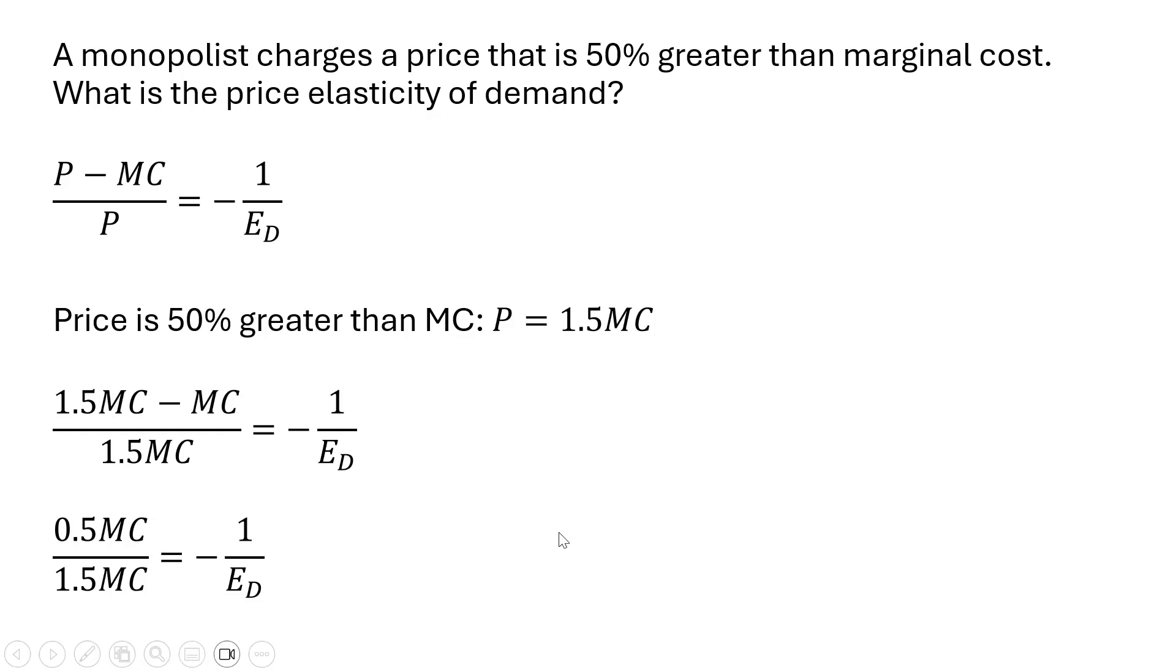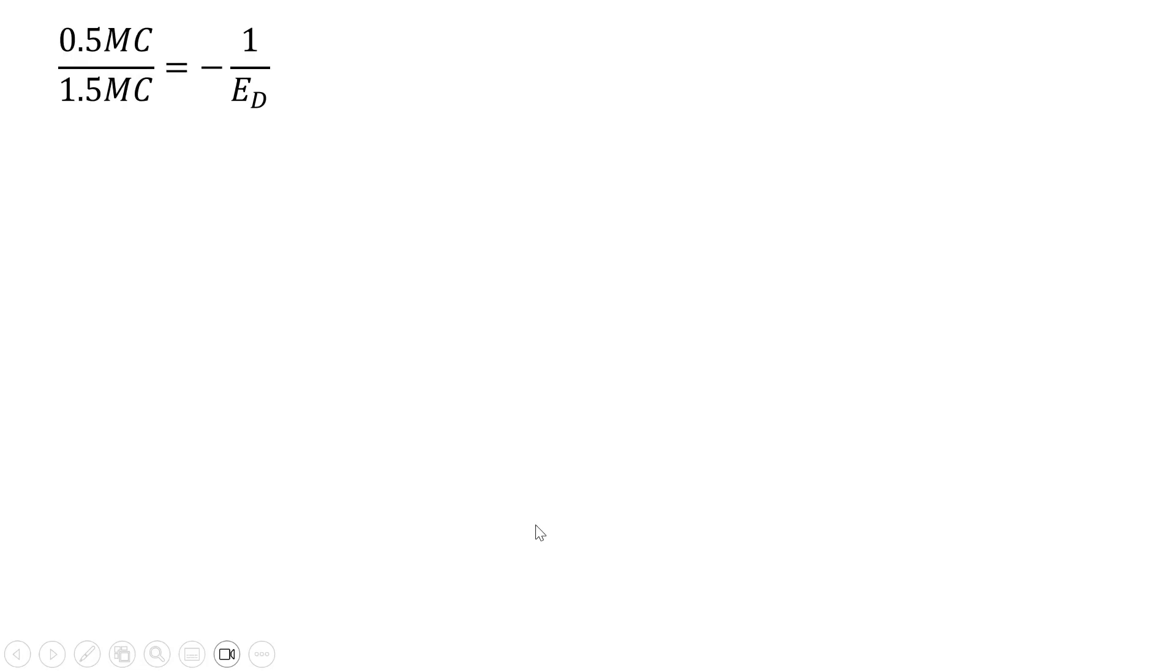The MCs will cancel, and we're left with the following: 0.5 divided by 1.5, which is just one-third. And now cross-multiplying, the price elasticity of demand is minus 3.